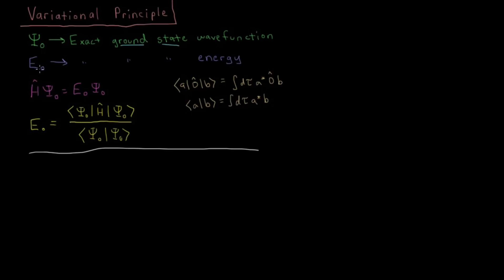We have E-naught, which is the exact ground state energy. We have the Schrödinger equation where the Hamiltonian H acting on psi-naught equals E times psi-naught — we get the energy back as the eigenvalue of the Hamiltonian, and psi-naught is an eigenfunction of that Hamiltonian for whatever system we're talking about.